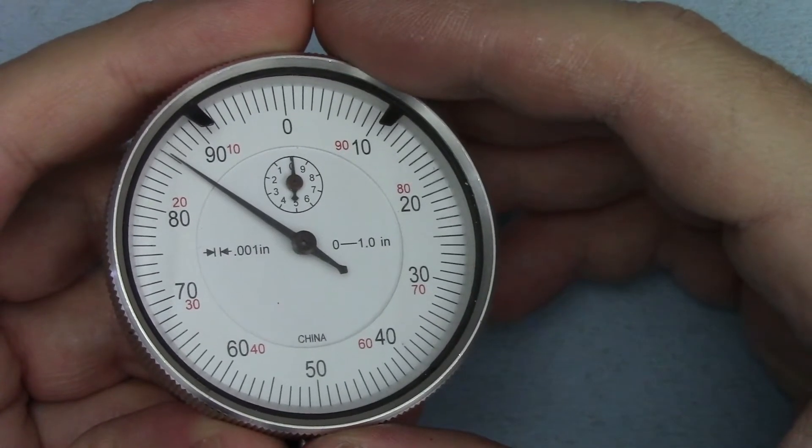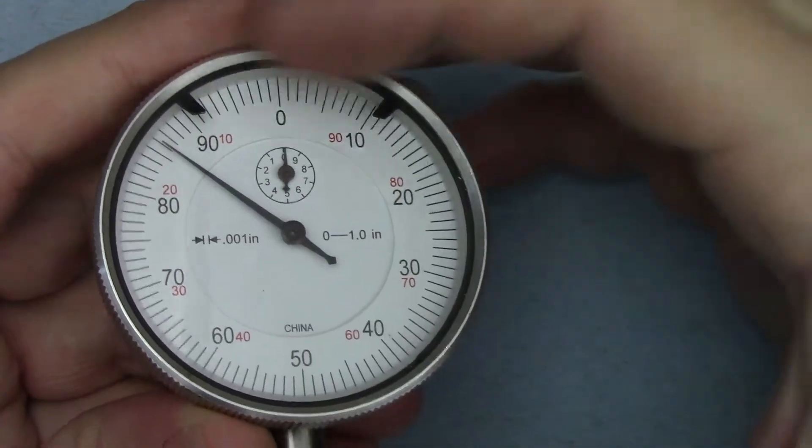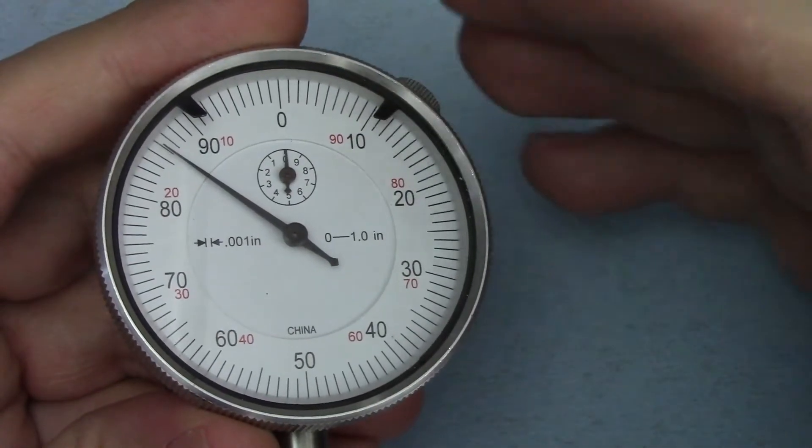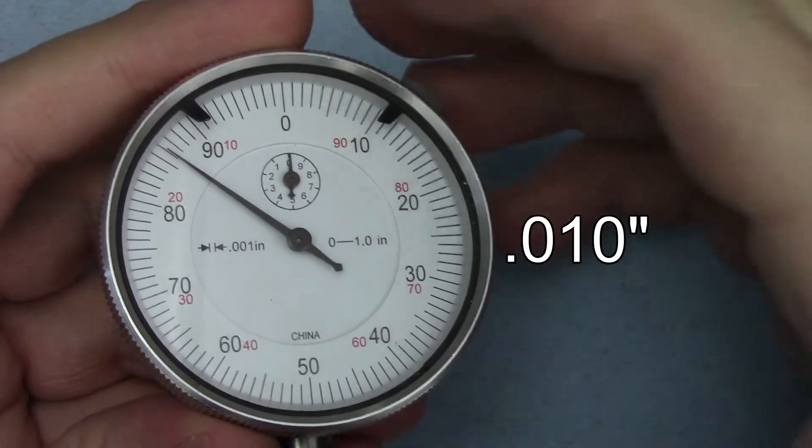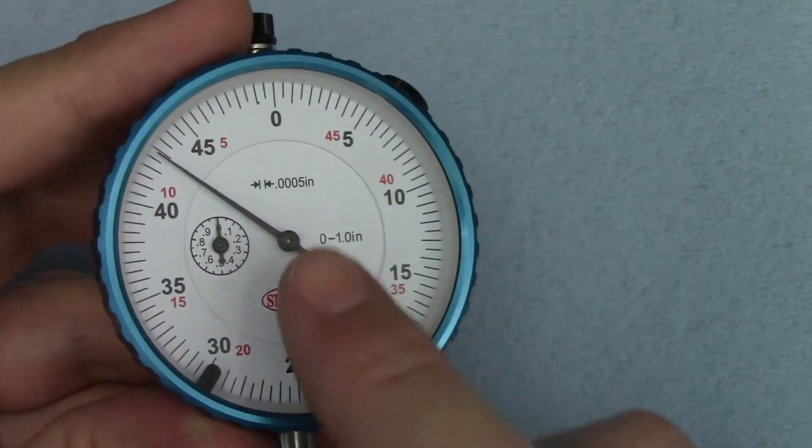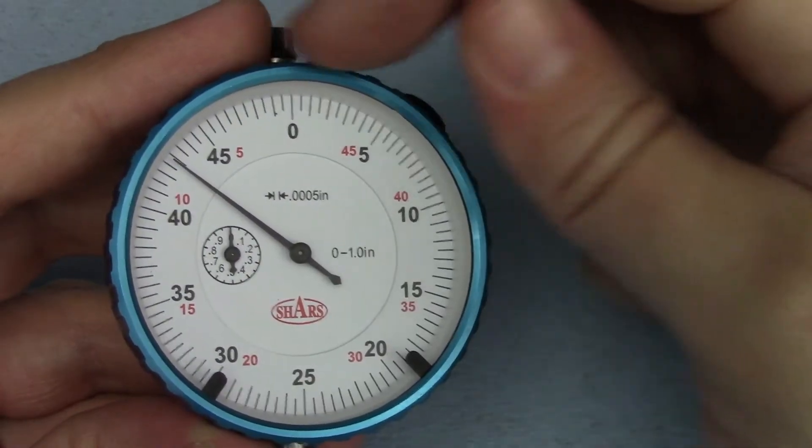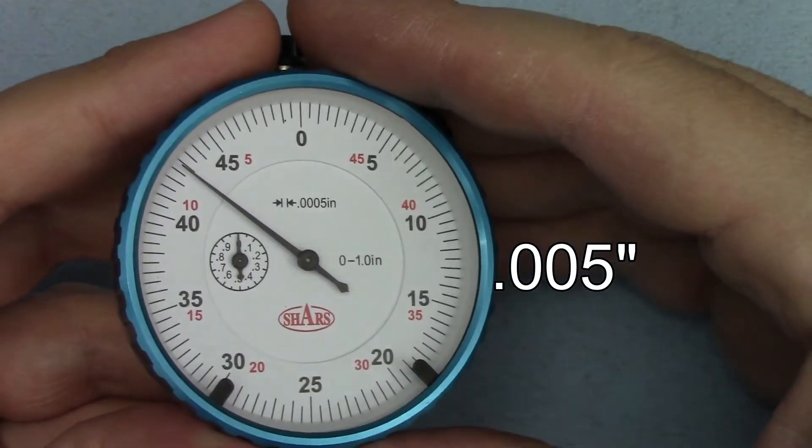Once you know what each graduation represents, it's easy to figure out what the numbered lines mean. In the case of this thousandths indicator, every numbered line is ten thousandths of an inch. This one's graduated in half thousandths, so every numbered line is five thousandths of an inch.